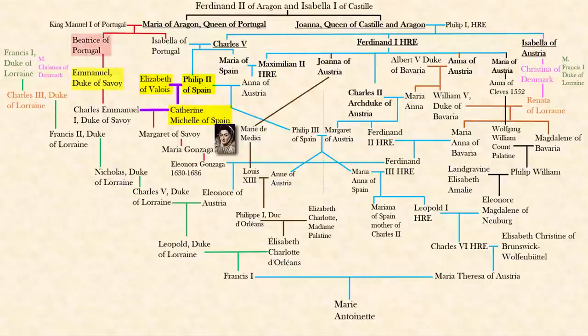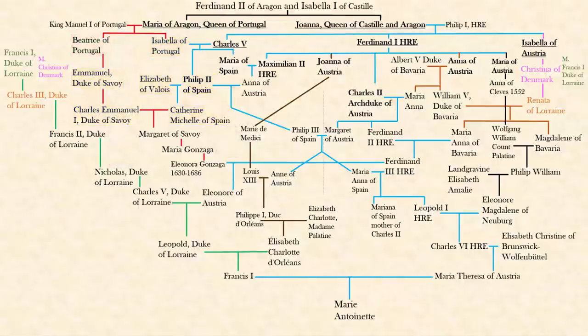Catherine Michelle is important because she marries into the Portuguese line, which eventually marries back into the Habsburgs. On the Portuguese side, Beatrice — the sister to Philip II's mom Isabella — had a grandson Charles Emmanuel, who married Catherine Michelle, his second cousin. So the two grandkids have their own Portuguese family together. I call them Portuguese even though he's the Duke of Savoy.